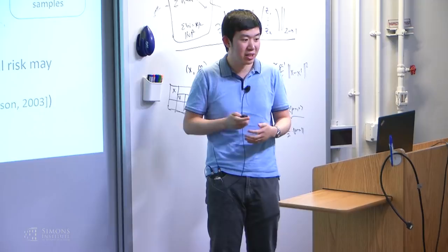Let me state our results. What we can show is: if the original function capital F has all of these nice properties, and if the algorithm only has access to a function small f that is pointwise close to the unknown function capital F, then if this difference nu is at most something like the square root of epsilon cubed over rho times 1 over d — where rho is a Lipschitz parameter for the Hessian and d is the dimension of x — then there is a polynomial time algorithm that can find an epsilon-approximate local minimum of the original function F.